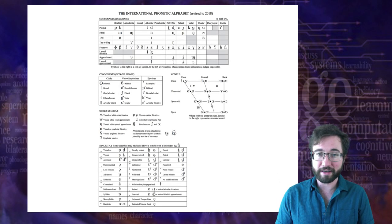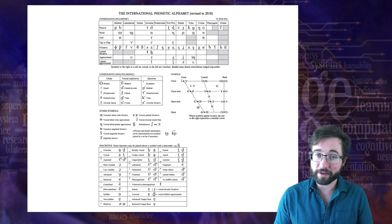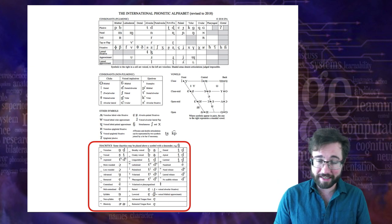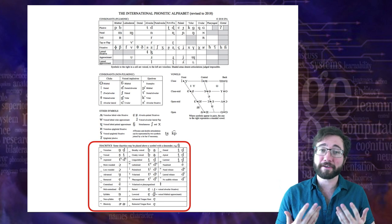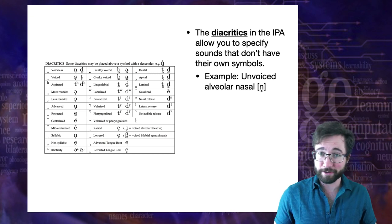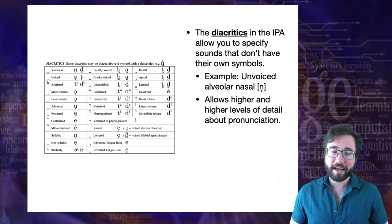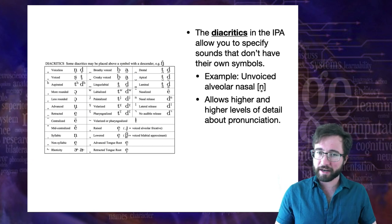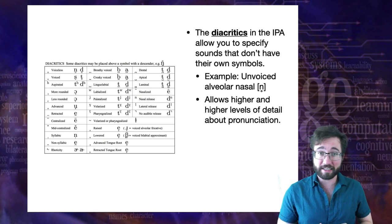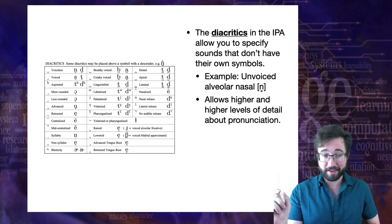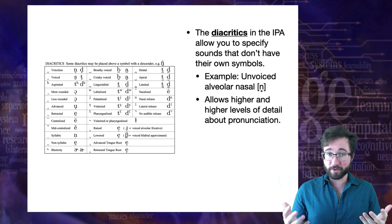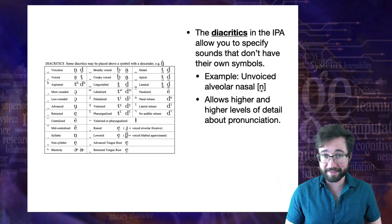We are almost done with the International Phonetic Alphabet chart. We've completely covered consonants and vowels, and talked about diacritics. Diacritics are the extra markings you add below, above, or beside a symbol to modify its features. They allow you to specify sounds that don't have their own symbols, and to describe someone's speech in increasing levels of detail — every little nasalization, aspiration, and so on.